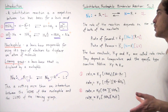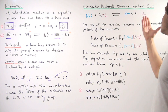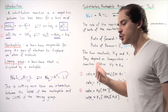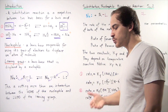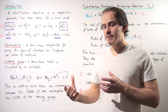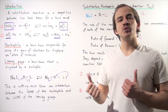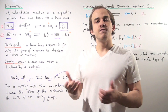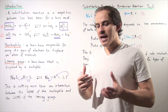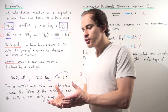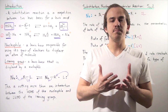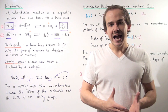So once again, to summarize: an SN2 reaction is a substitution reaction, which simply means that there is a competition between two different Lewis bases for a single Lewis acid. A substitution reaction is a Lewis acid-base reaction.